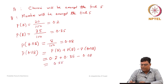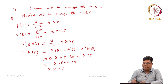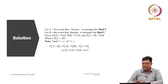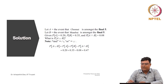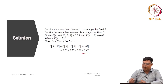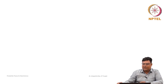So all these values are given: 0.2 plus 0.35 minus 0.08. Simplifying, this is 0.47. So the answer is that Chennai or Mumbai will be amongst the final five with probability 0.47. This is one numerical example related to these theorems. AND means intersection, OR means union.